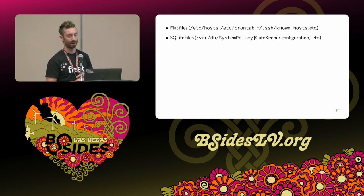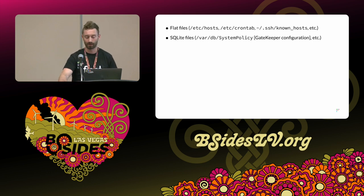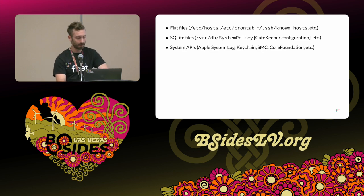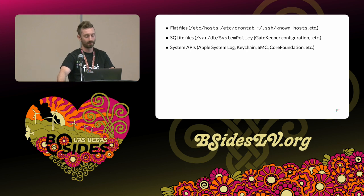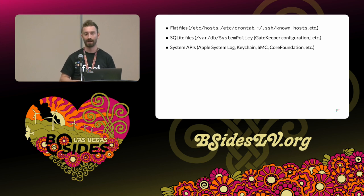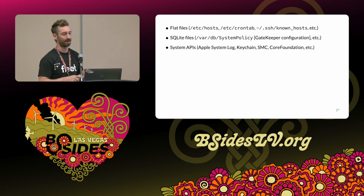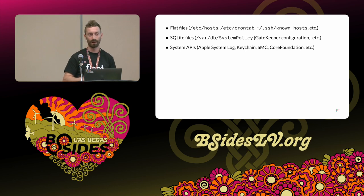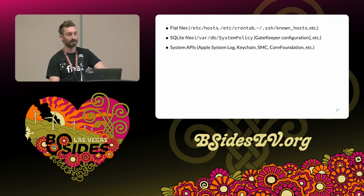OS Query can open SQLite files, which are becoming increasingly popular to store configuration about programs on systems. It can call a number of system APIs — here are some examples from macOS, but there are system APIs on Linux and Windows. Pretty much everything you can imagine wanting to know on a system, these APIs are available. And you don't have to write C, C++, or Objective-C. You just write your query and OS Query exposes that information, because someone else has already written the C code for interacting with these APIs.